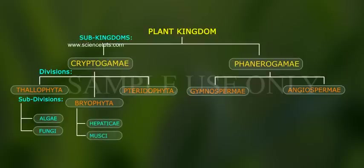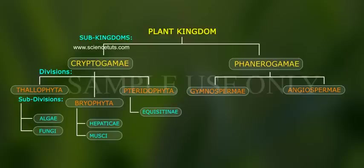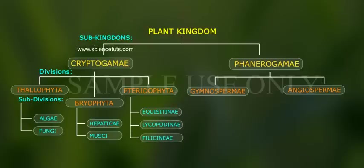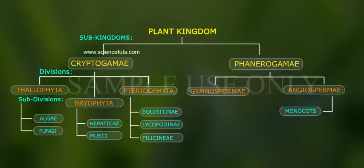Division Pteridophyta includes three classes: Class I, Equisetinae, Class II, Lycopodinae, and Class III, Filicinae. Division Angiosperms includes two classes: Class I, Monocots, and Class II, Dicots.